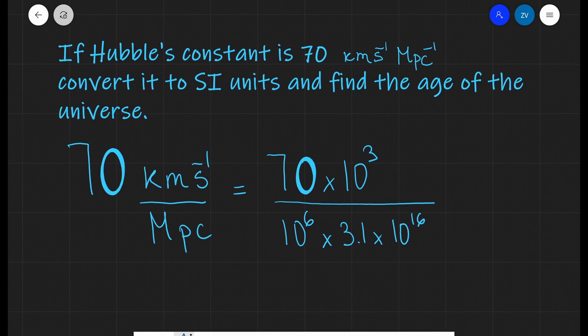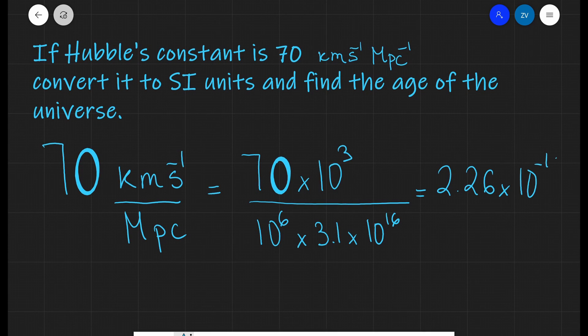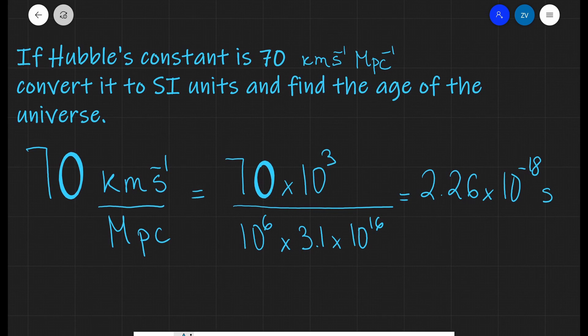Now if we put that into a scientific calculator, we are going to get 2.26 multiplied by 10 to the power of minus 18 seconds to the power of minus 1. Remember that's the SI unit for Hubble's constant: 1 over seconds or s to the power of minus 1.